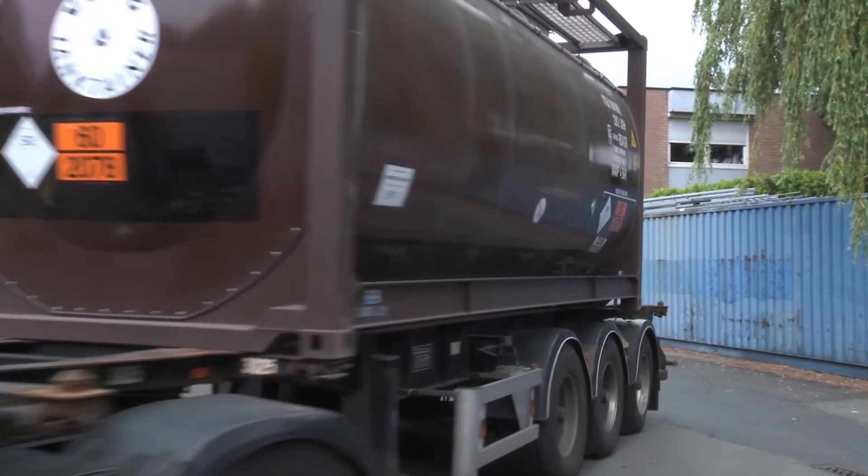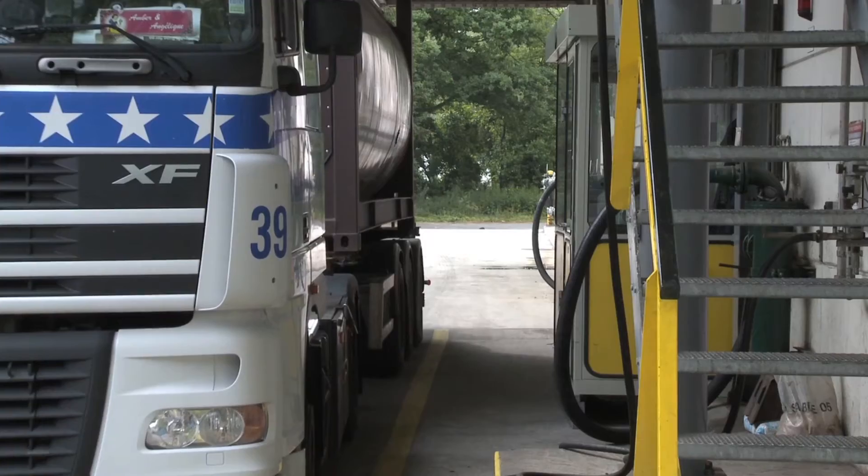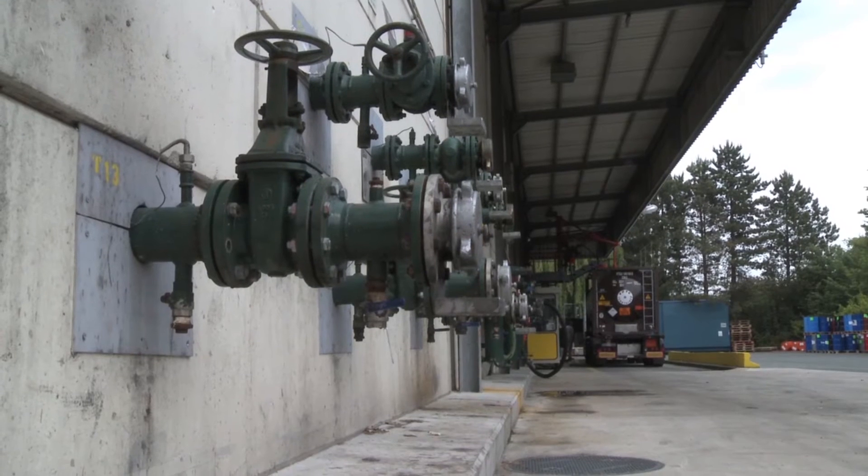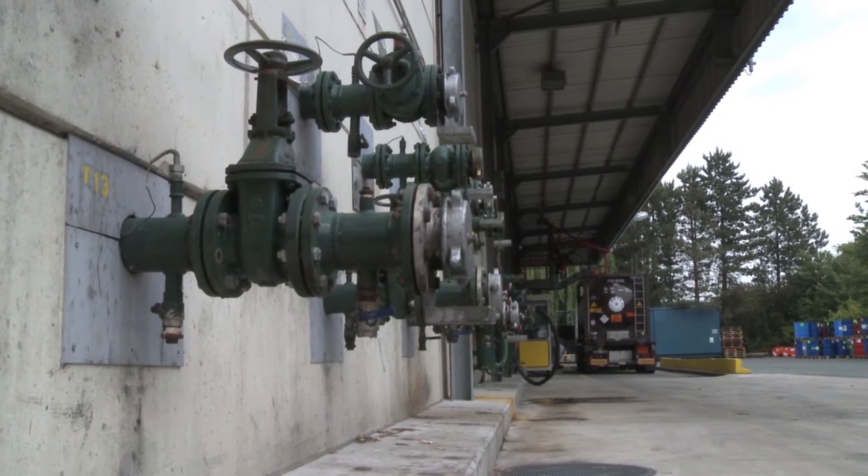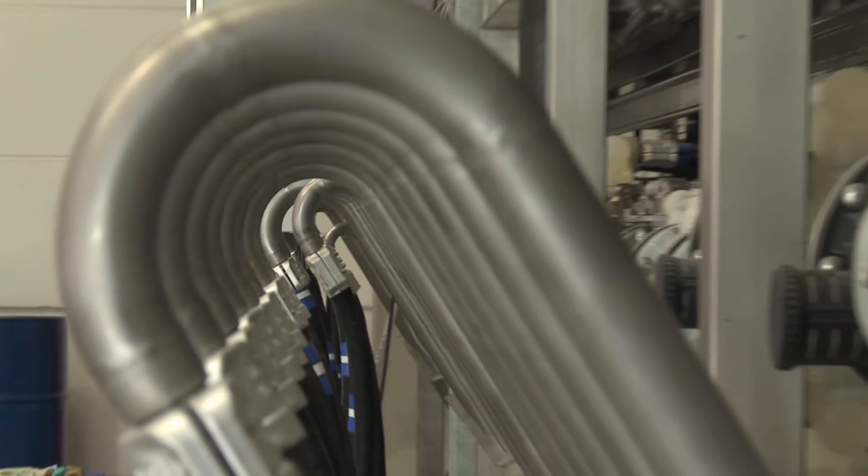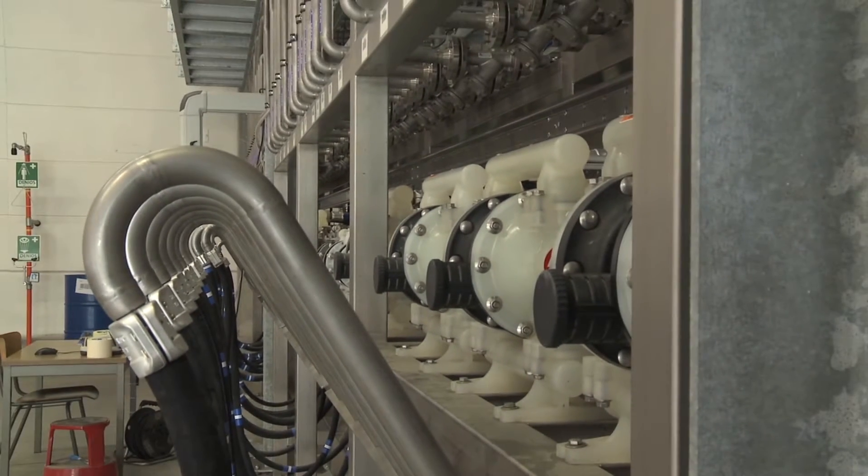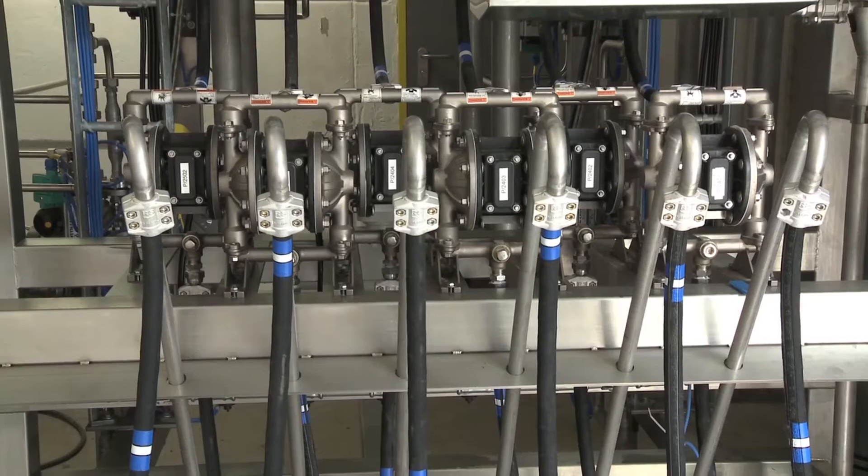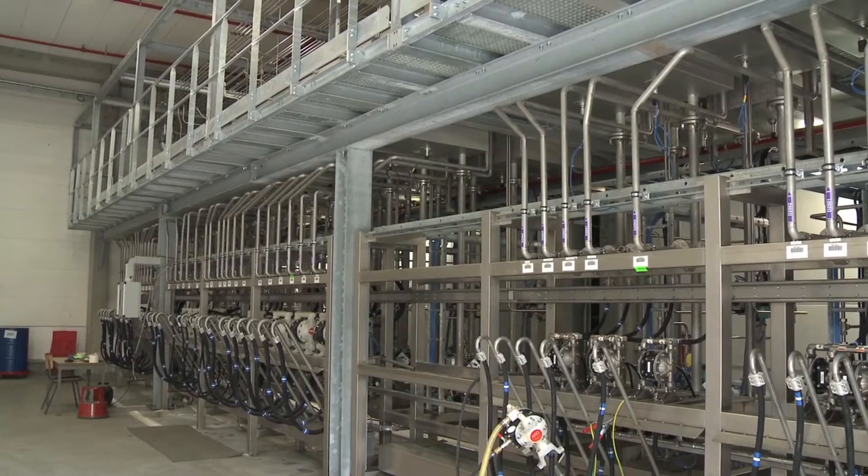Everything begins with the delivery of raw materials, which are delivered as liquids to on-site storage tanks. Individual substances are then pumped from these tanks to the production area via a closed pipe system. The whole process is computer controlled, so quantities are determined by the exact formulation of the foam to be produced.